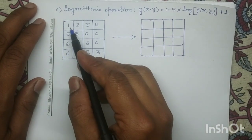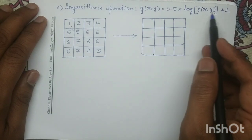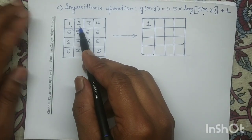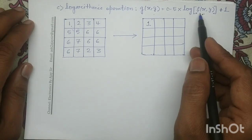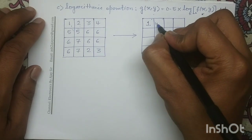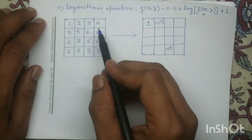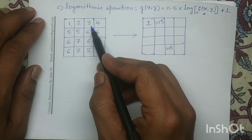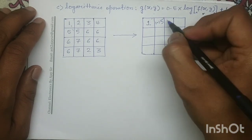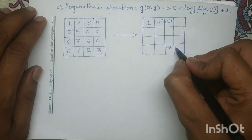For each pixel we will apply this transformation function. For pixel value 1, substituting fxy equals 1, log 1 equals 0, so g(x,y) becomes 1. For pixel intensity level 2, substituting fxy equals 2, 0.5 times log(2+1) becomes 1.15; here also I write 1.15 since this pixel also has intensity level 2. For input pixel intensity level 3, 0.5 log(3+1) equals 1.24; here also I write 1.24. For input image pixel intensity level 4, 0.5 times log(4+1) equals 1.30.